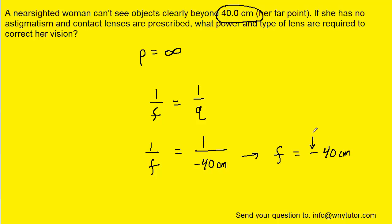The fact that the focal length turns out to be negative means that the lens required is a diverging lens. Diverging lenses have negative focal lengths. Converging lenses have positive focal lengths. So the answer to the first part of the question will be a diverging lens.